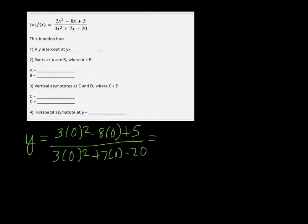So you see that we're just left with 5 over minus 20, which is negative one-fourth. So we have one y-intercept at negative one-fourth.